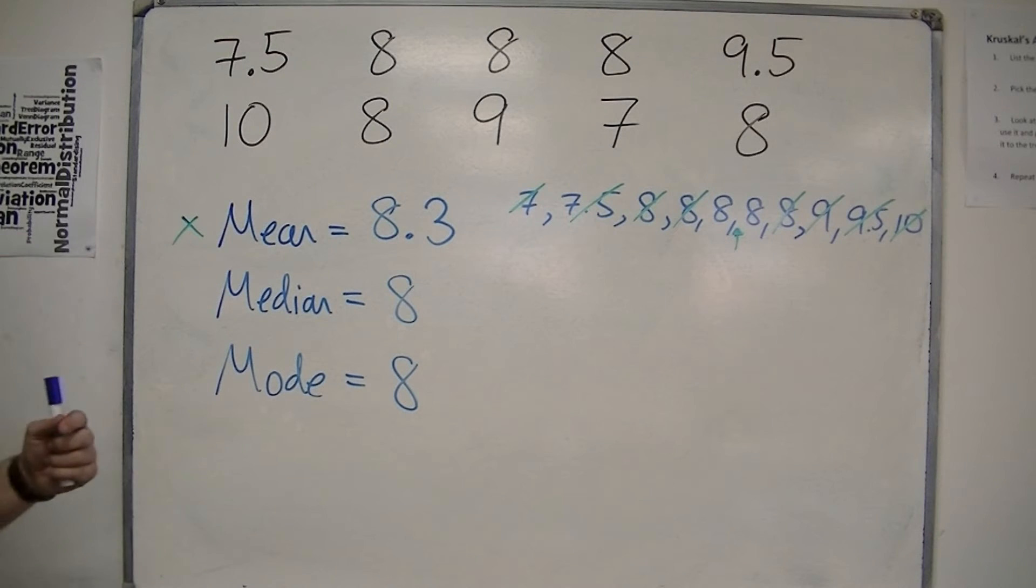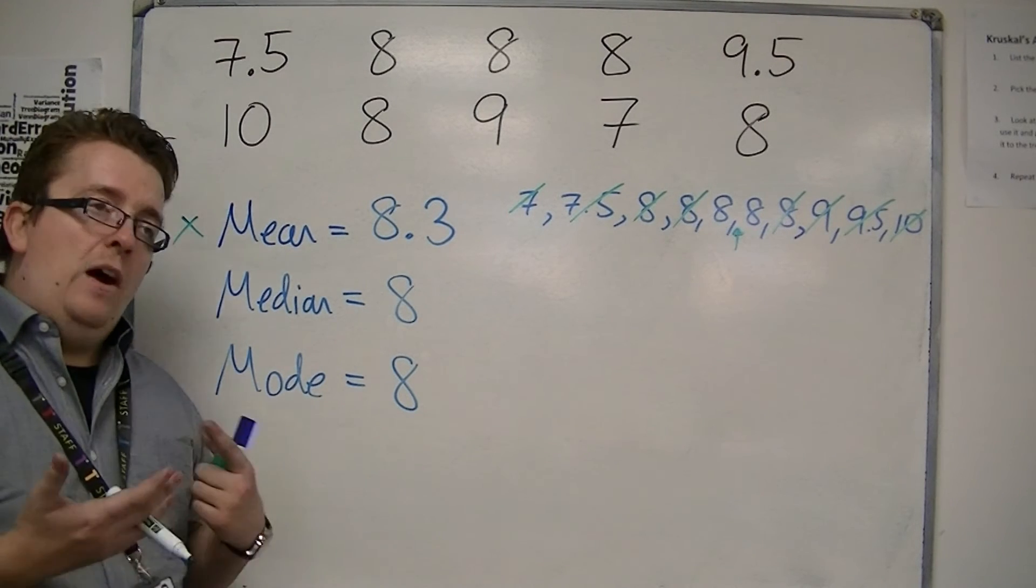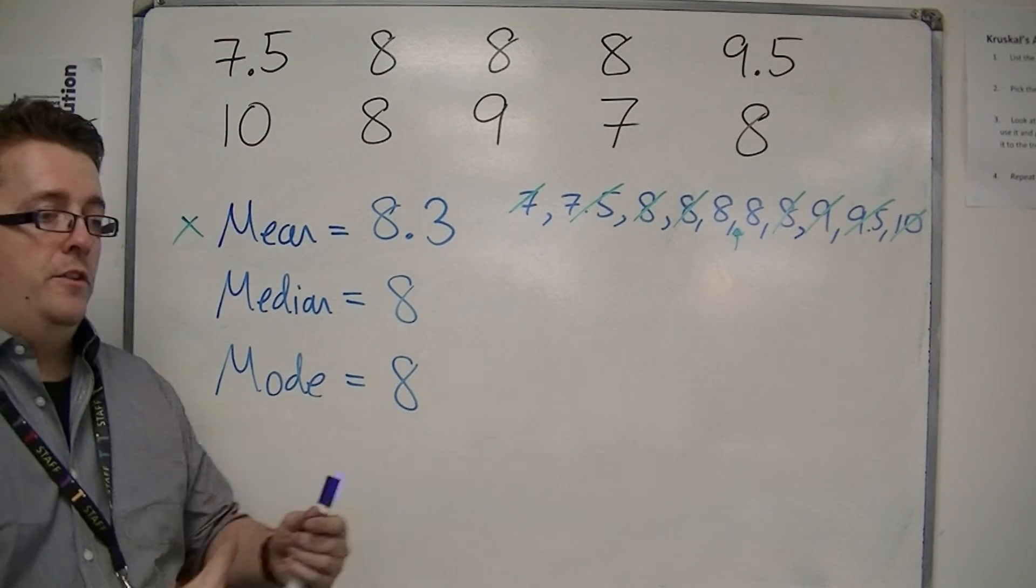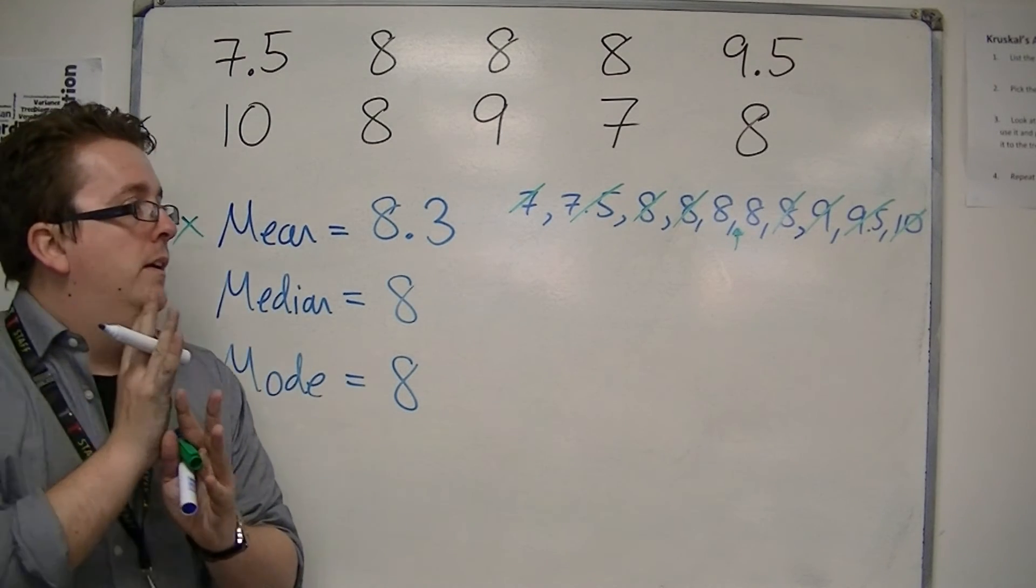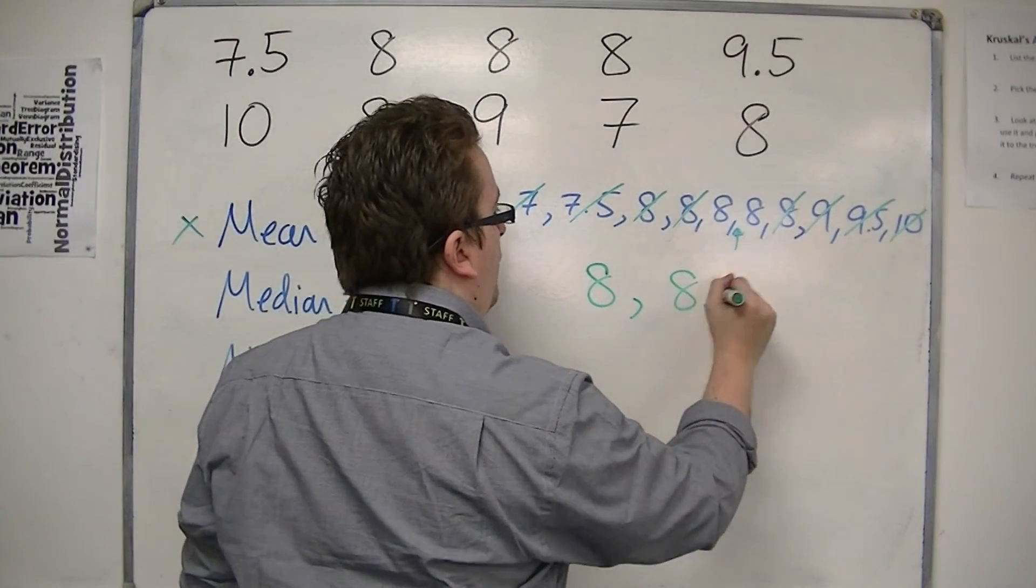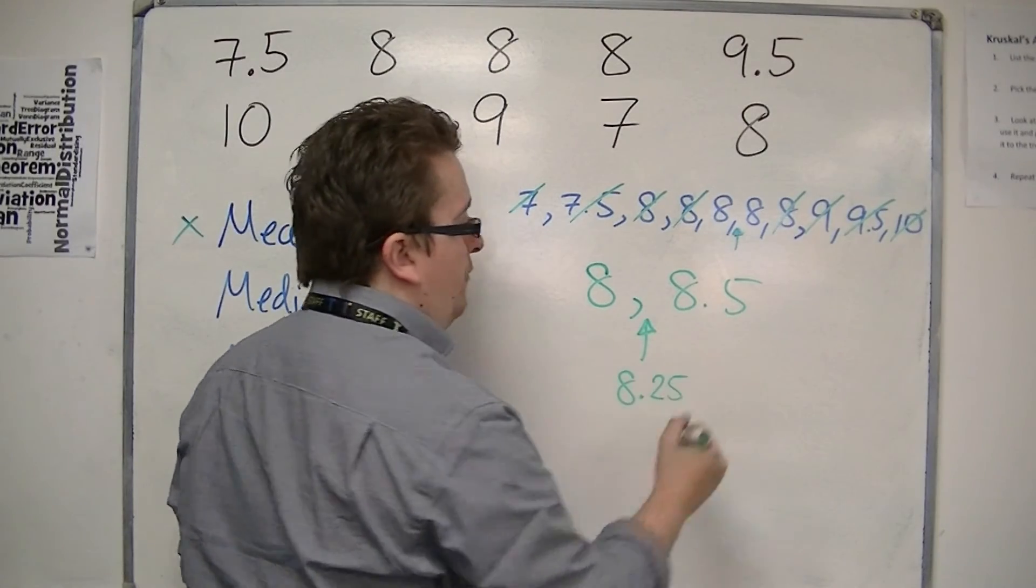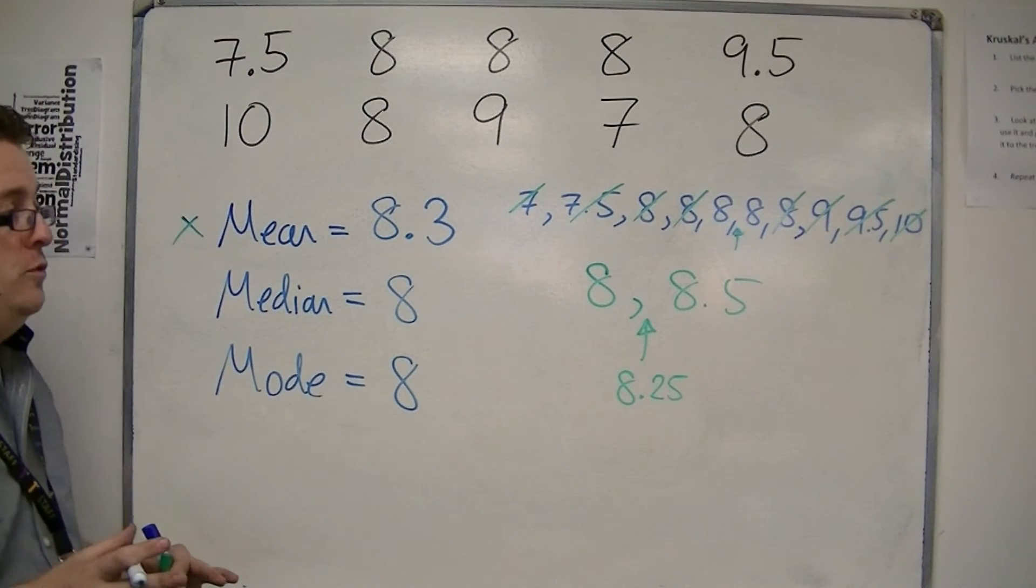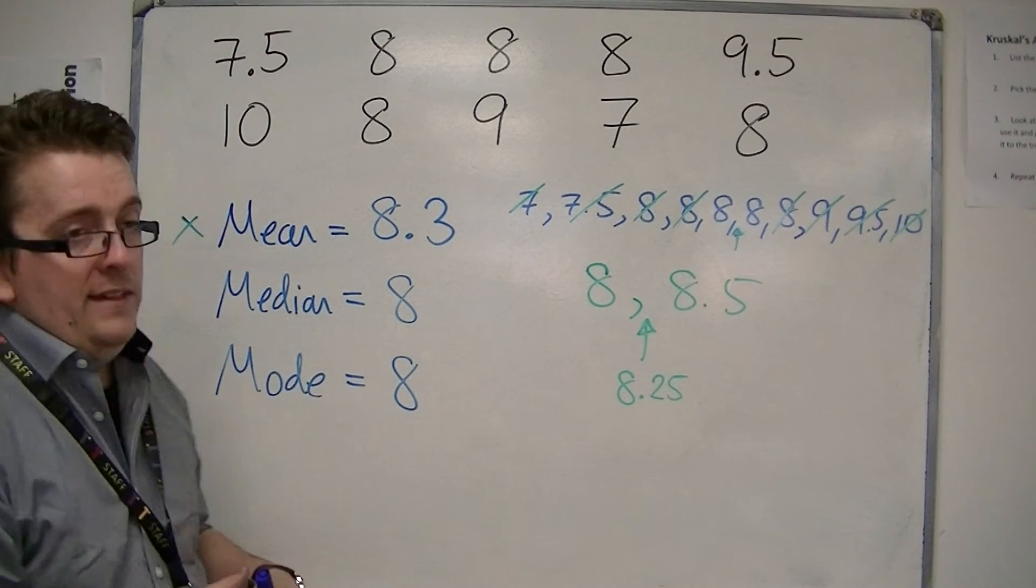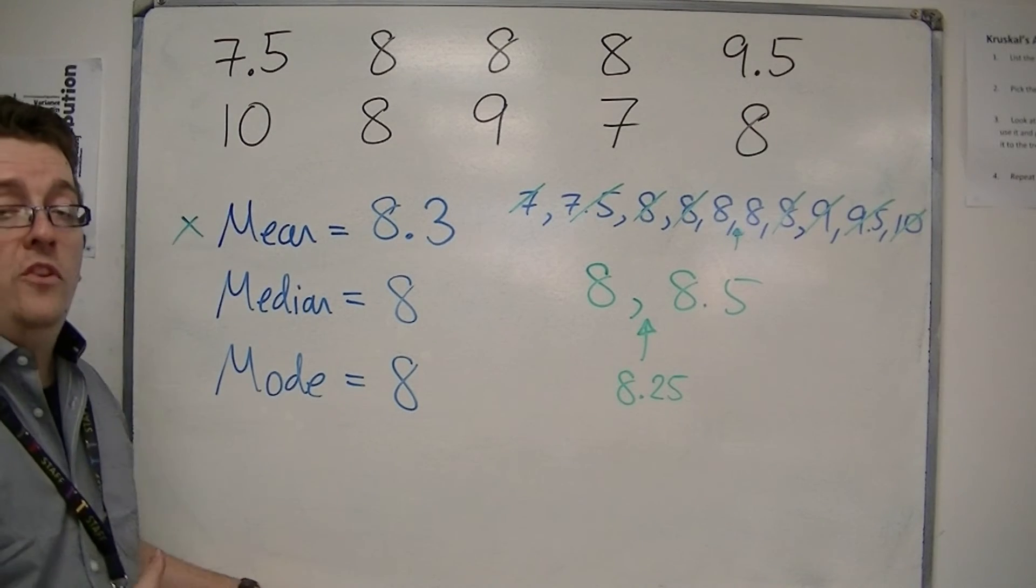The median has given me 8. Now, that's seemingly reasonable, okay? However, because the median is looking to find the middle number, it could have been that I ended up between an 8 and an 8.5. In which case, the median would have been 8.25. And there is no 8.25 shoe, okay? So the median could potentially have come up with a number that wouldn't have been useful at all.